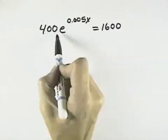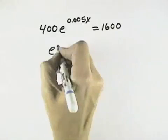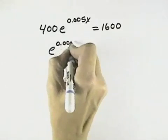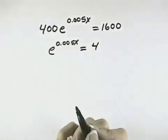But first we'll get rid of the constant in front of our exponential expression so we can work more easily with it. So I'm going to divide both sides by 400. When I do that, the 400 cancels on the left, and I'm left with 4 on the right.